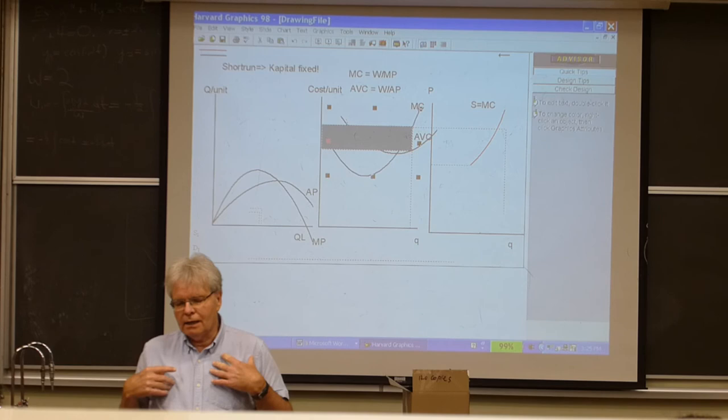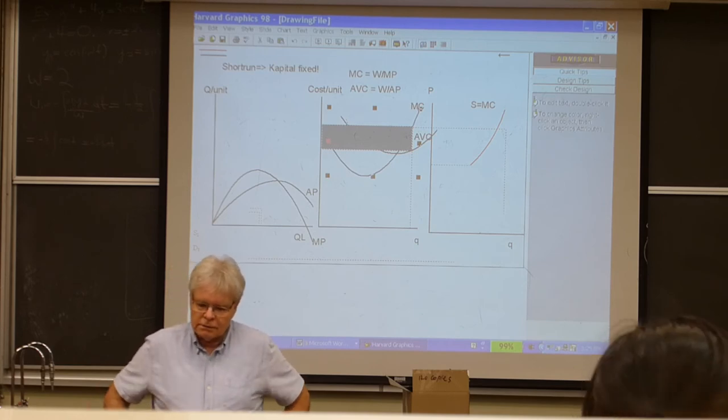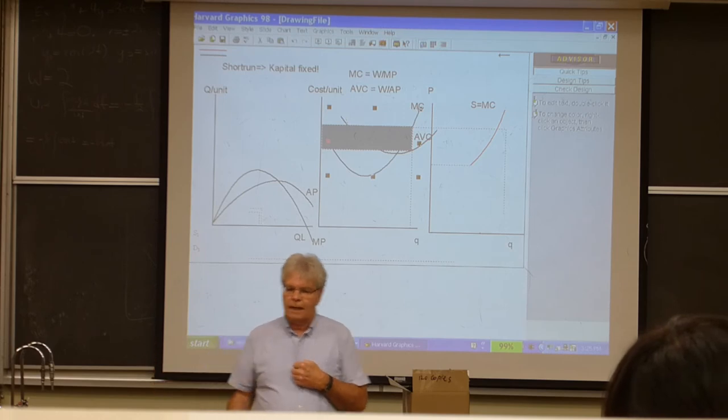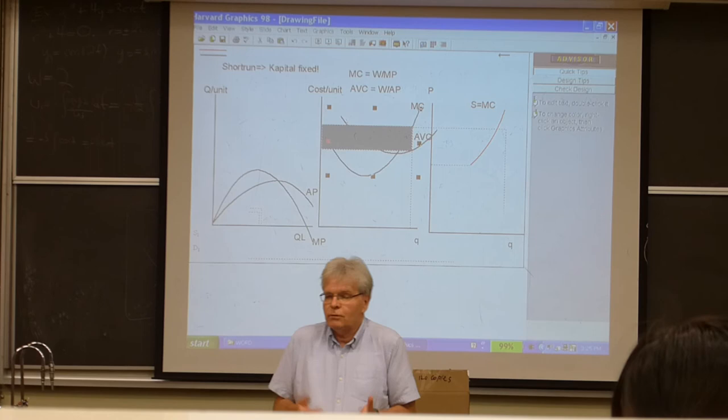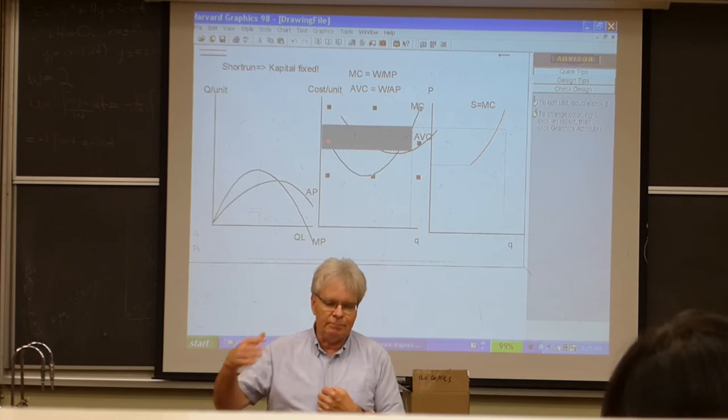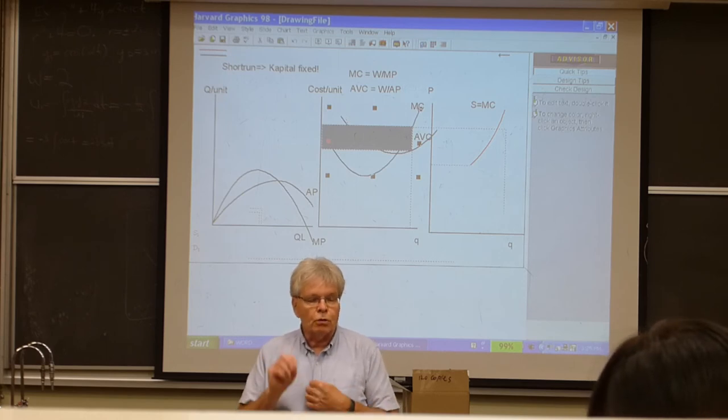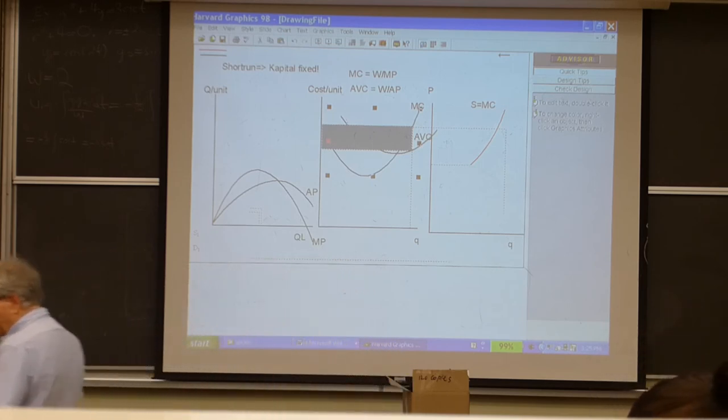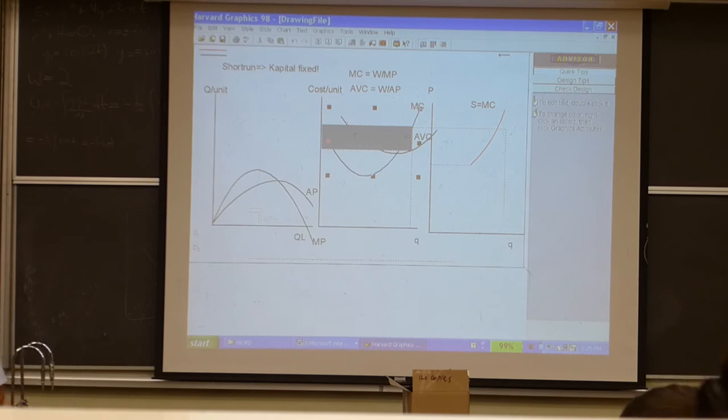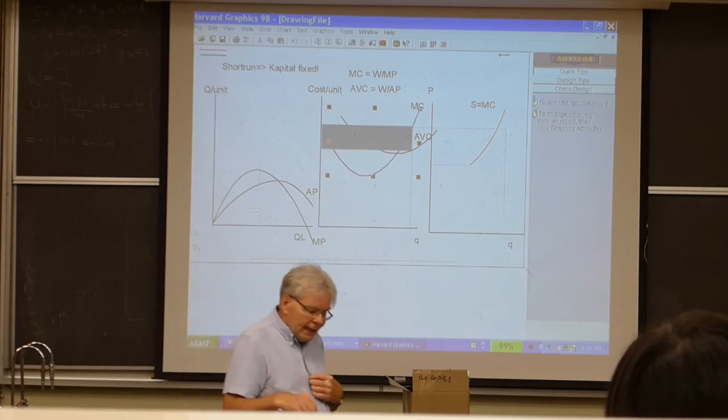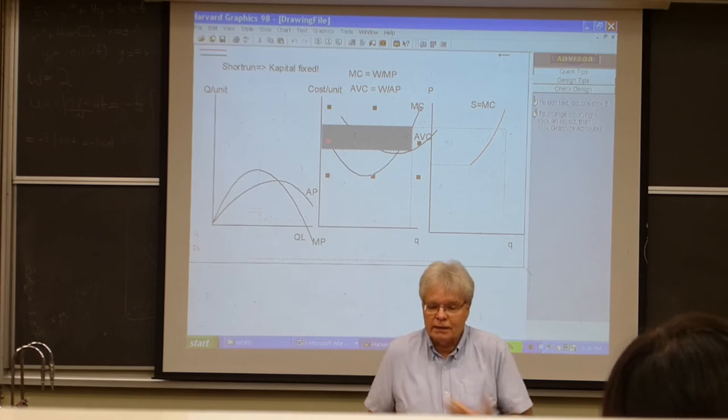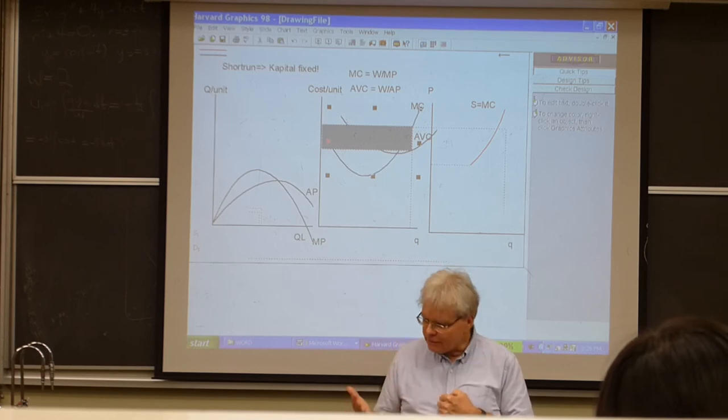When we do all that, we realize that the marginal cost defines the supply for the firm, except that the firm does not produce below minimum average variable cost. Because, simple example: I will operate my restaurant even if I'm not covering all my fixed costs. So long as my price is greater than my variable cost, so long as at the end of the day I can pay my workers and cover my fuel and heating costs, I continue to operate the restaurant.